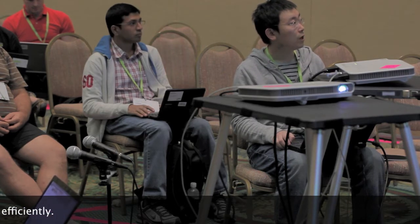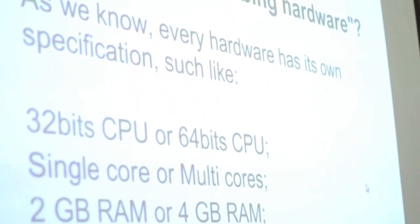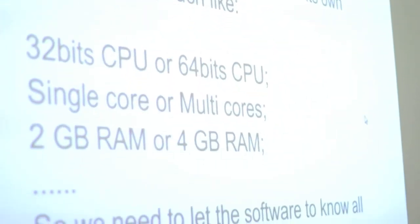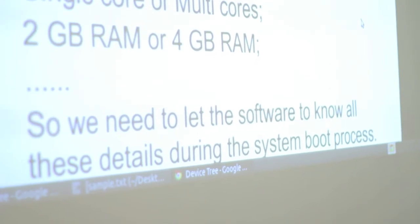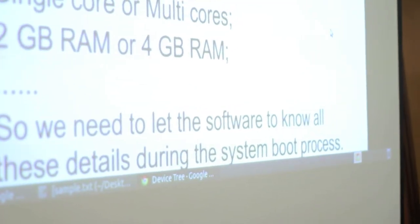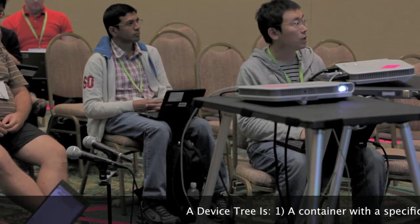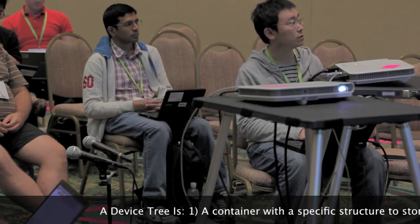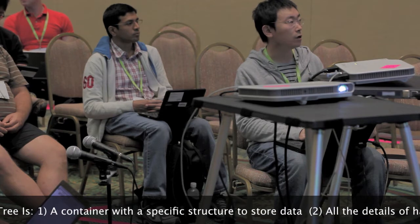The second part is: what does hardware description mean? Hardware has its own specification — we know 32-bit CPU or 64-bit CPU, single or multiple cores, 2GB RAM or 4GB RAM. In order to run our software well on different hardware, the operating system needs to know all the details — specific hardware details during the system boot process.